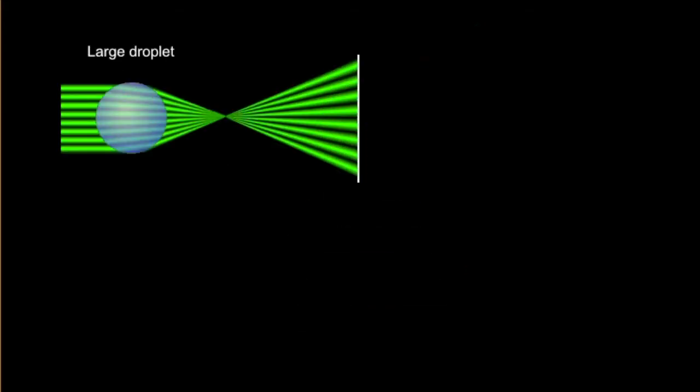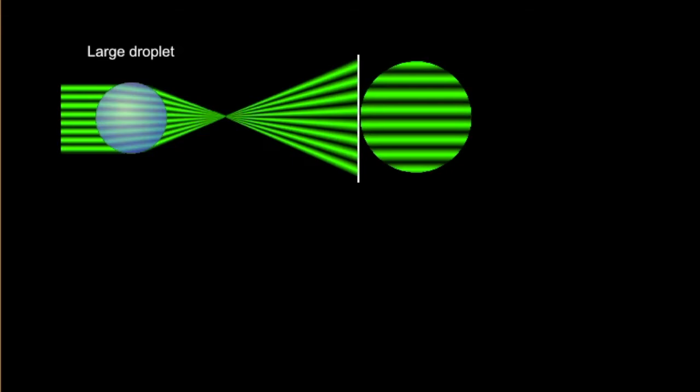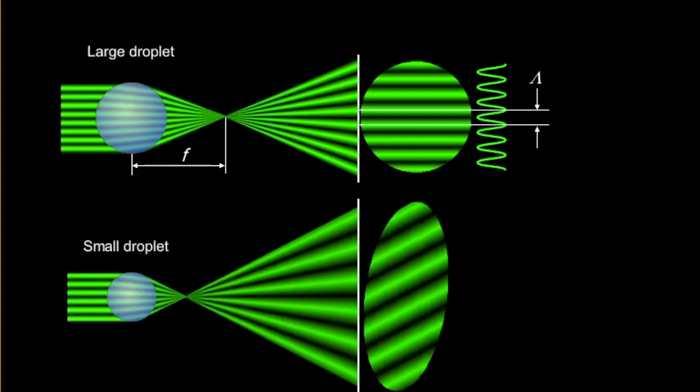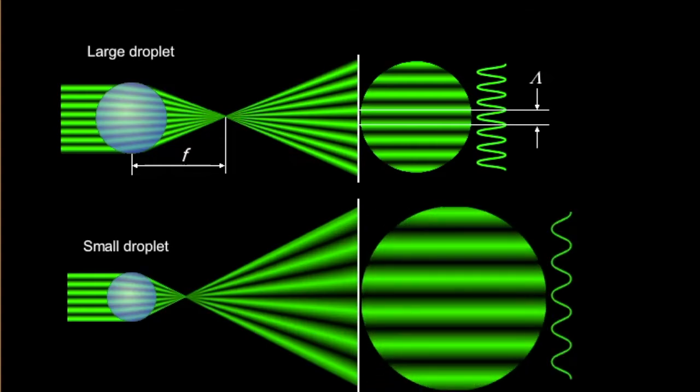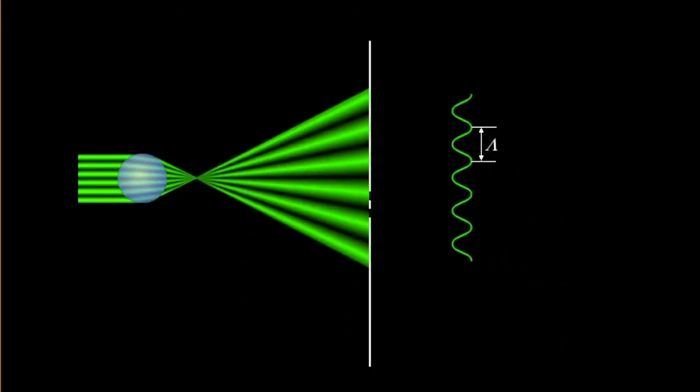So here's the difference between the large droplets and small droplets. Each droplet acts kind of similar to a lens. So smaller droplets are stronger lenses and they have shorter focal length. So they create or they image the fringes to a different magnitude into the receiver.